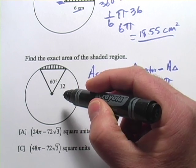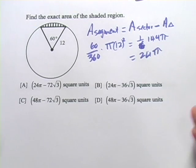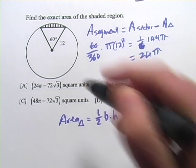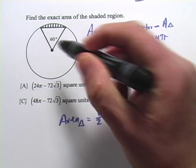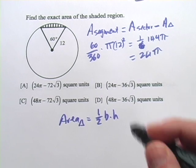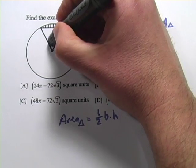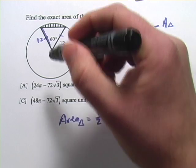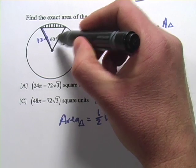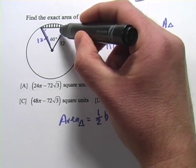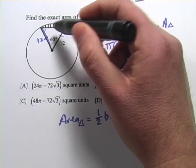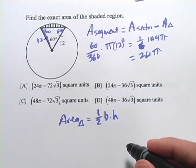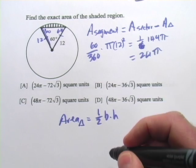Now, how do we figure out the area of this triangle? The area of a triangle is one-half the base times the height. In this triangle, we've got one angle of 60 degrees and sides that are both radii, so both sides are 12. We've got an isosceles triangle, and since the top angle is 60 degrees, the other two angles are also 60 degrees each. So this is not just isosceles — it's an equilateral triangle.